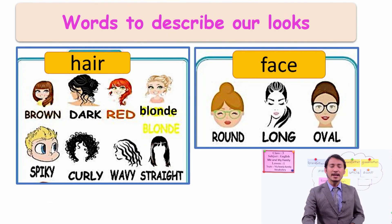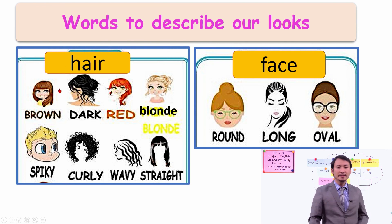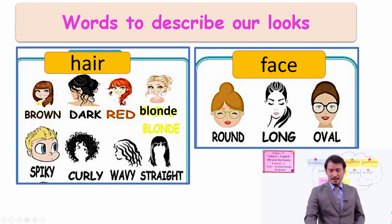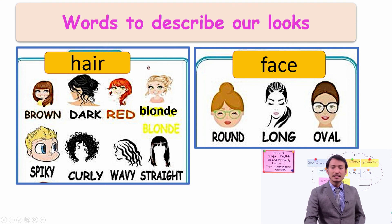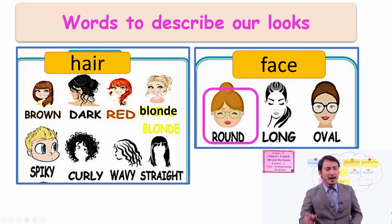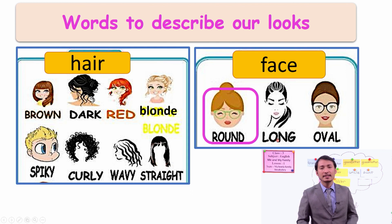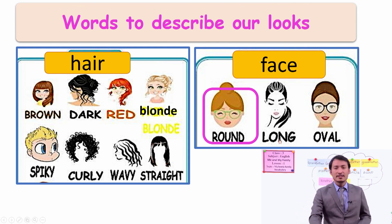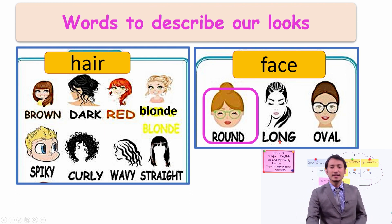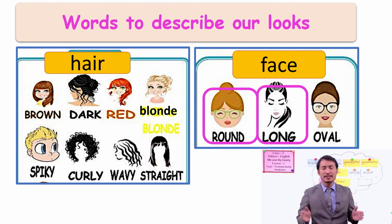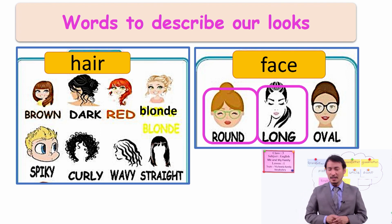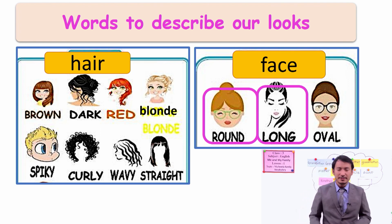Let's look at the face and hair. You can see different faces and different types of hair. Let's see first — face. Some faces are round, like similar to a circle. And some faces are long. Do you have a long face or a round face? You can look at yourself in front of a mirror.